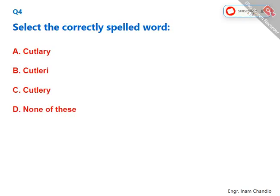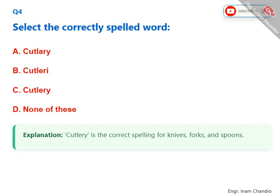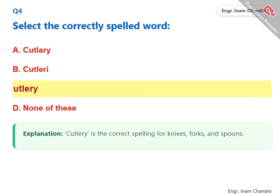Select the correctly spelled word. Cutlery is the correct spelling for knives, forks, and spoons. The correct answer is C. Cutlery.